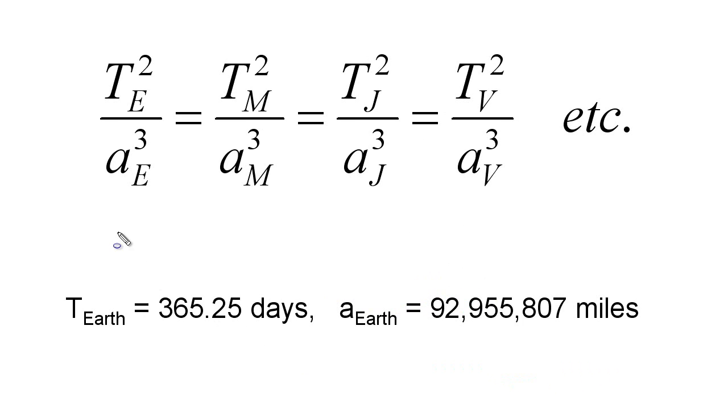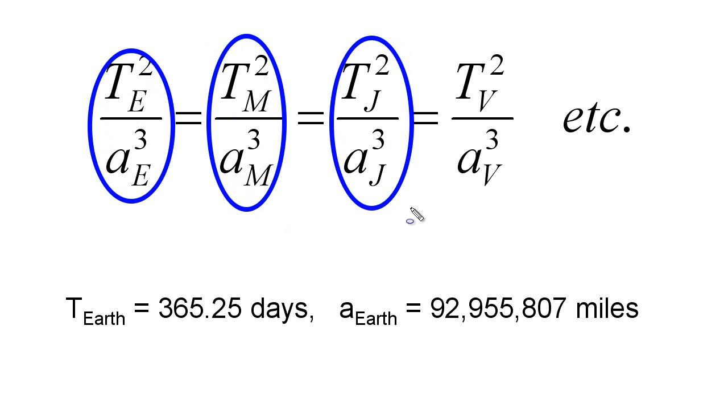According to Kepler's third law, T squared over a cubed for Earth is equal to T squared over a cubed for Mars, same for Jupiter, Venus, etc.